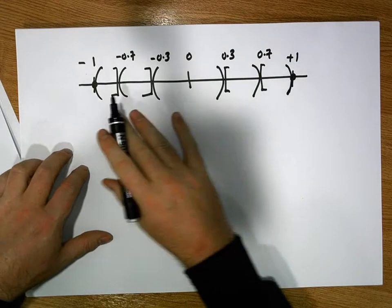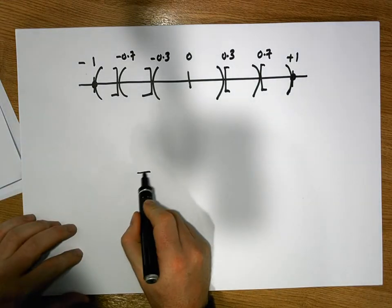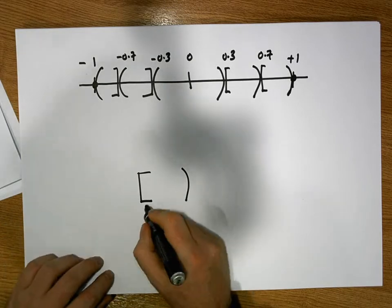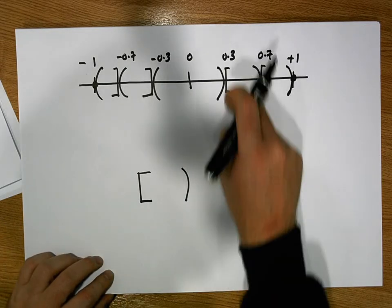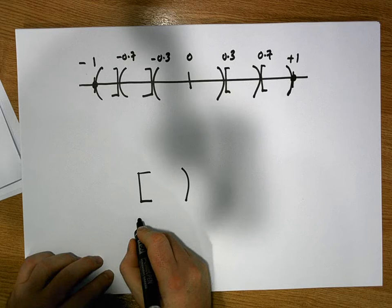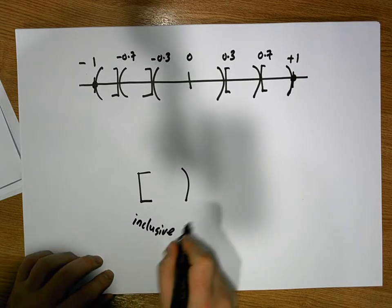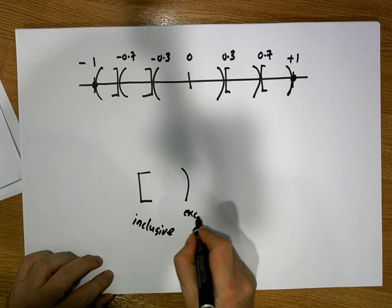These intervals, just so you can interpret them, are half open, half closed intervals. A square interval bracket is inclusive of the value, whereas a round bracket is exclusive.